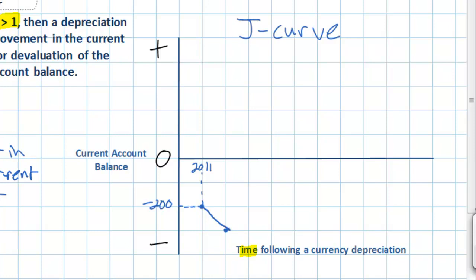Over time, consumers of all goods become more responsive to changes in price. So as time goes by — perhaps over the span of months or even a year or so — American consumers will start to notice that foreign goods are becoming more and more expensive, and will begin to substitute foreign goods for domestically produced goods. We'd expect this decline in the current account to level out over time, and eventually, once foreign consumers become more responsive to the cheaper US exports, American exports will start to rise at a proportionally greater rate. Over time, the US current account should start to move towards surplus.